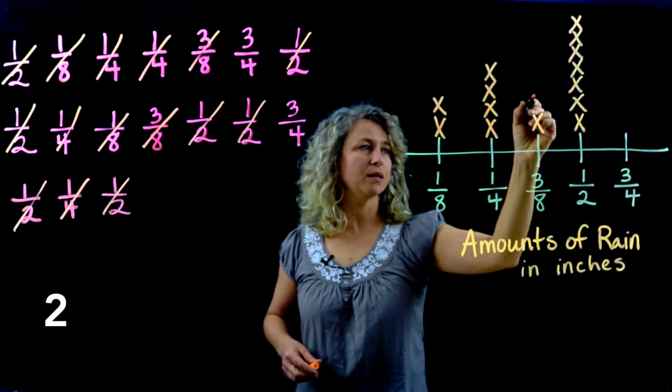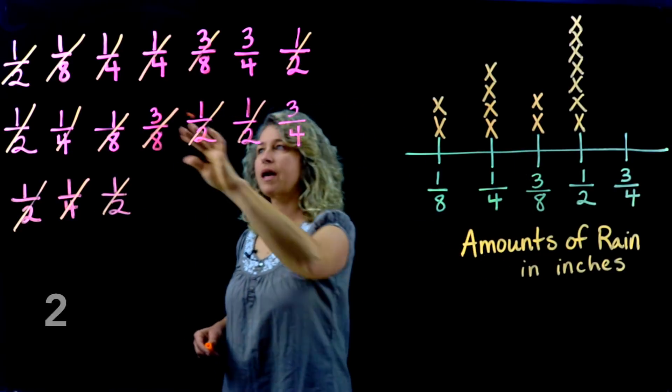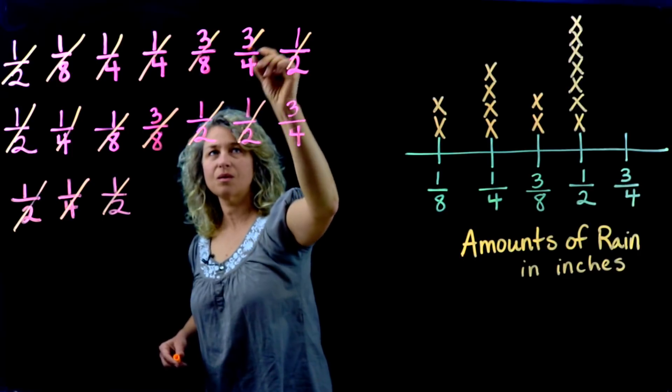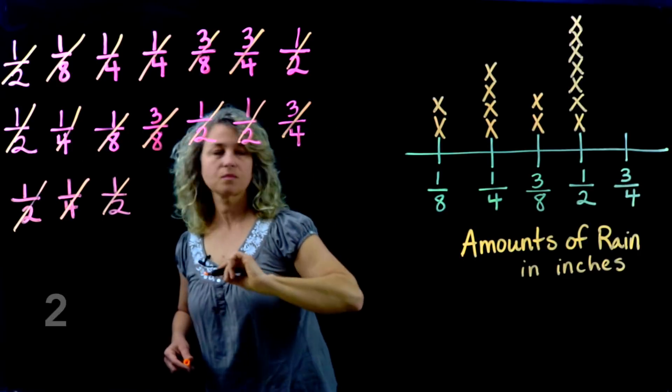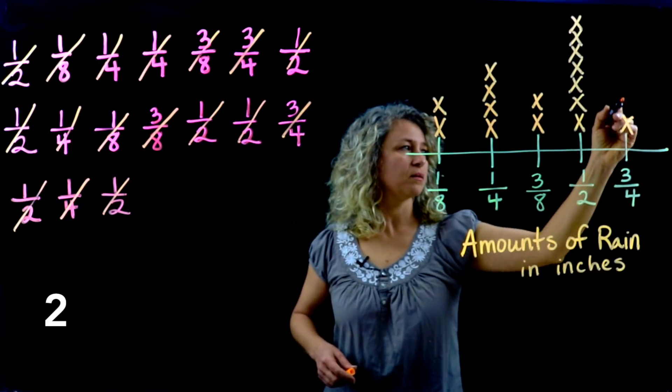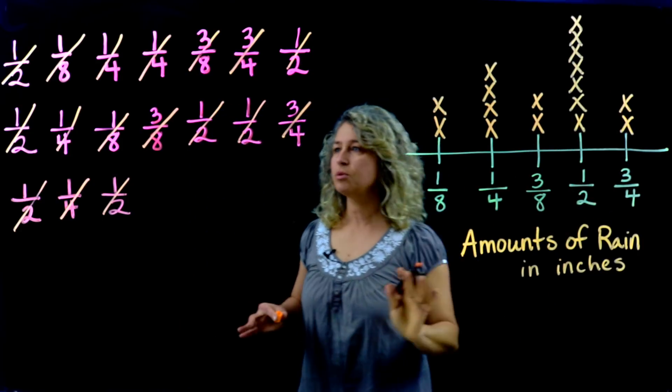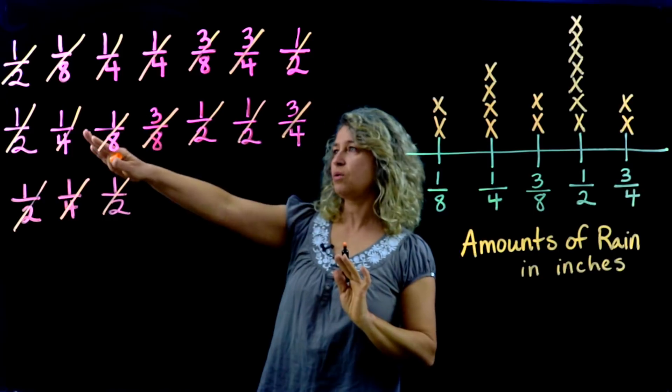Put it on the fourths: 1, 2, 3, 4. Then three-eighths: 1, 2. We have 2. And the last one is three-fourths: 1, 2. Always double check and make sure everything has been crossed off.